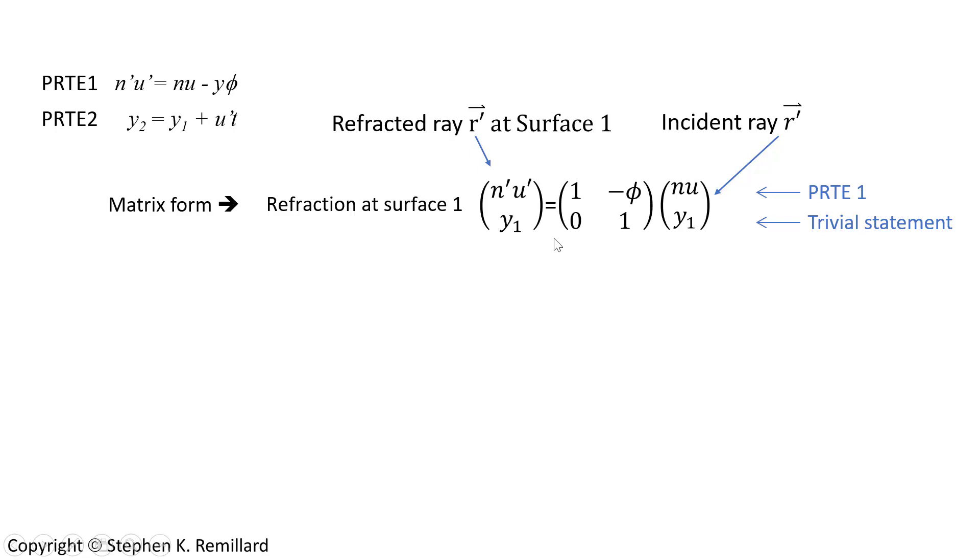The second row of this equation is just the trivial statement that y1 equals y1, so it's a placeholder. This matrix looks the same for all refractive interfaces, and so it has the common name of refraction matrix, which has always got a one by one diagonal with a zero in one place, and minus the surface power in the other place.